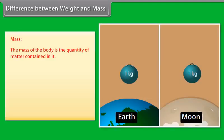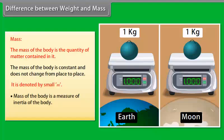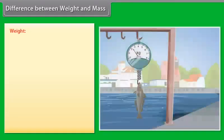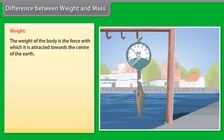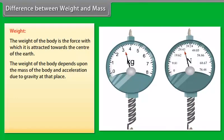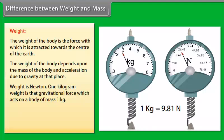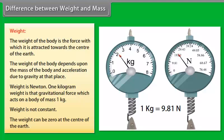Difference between weight and mass: Mass is the quantity of matter contained in a body. It is constant and does not change from place to place, is denoted by small m, is a measure of inertia, and cannot be zero. Weight is the force with which the body is attracted towards the center of the earth. It depends on mass and acceleration due to gravity at that place. 1 kg weight is the gravitational force on a body of mass 1 kg. Weight is not constant and can be zero at the center of the earth.